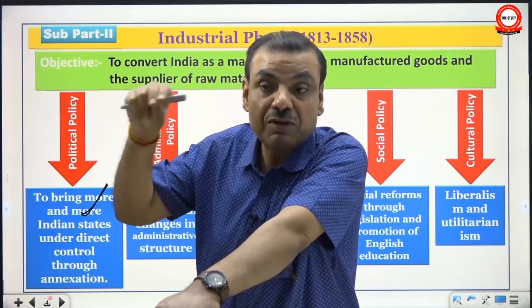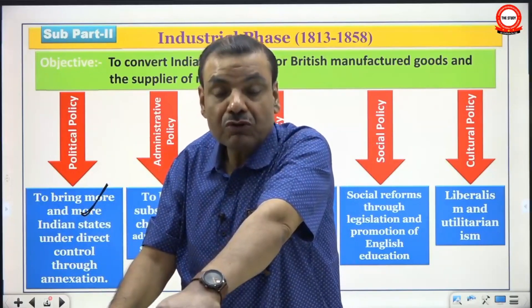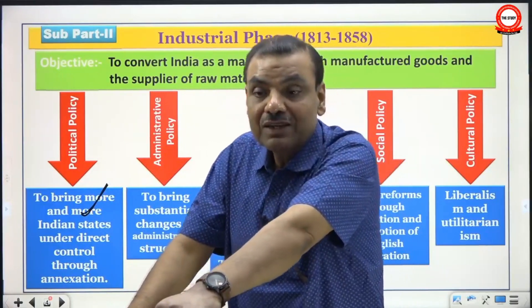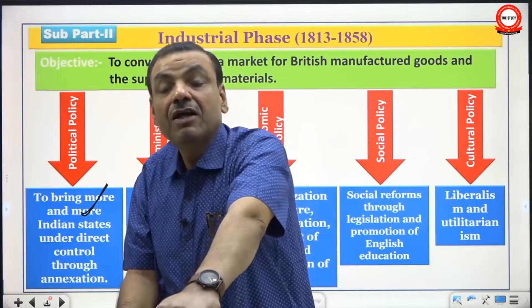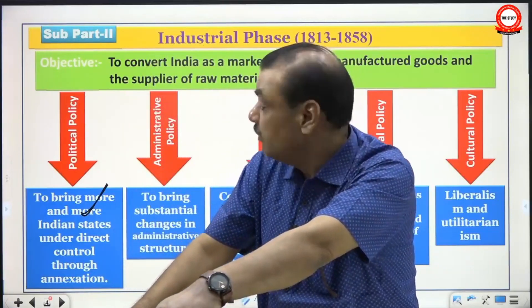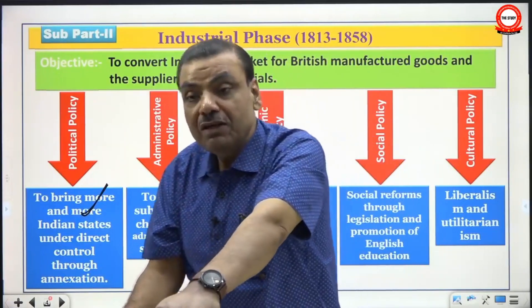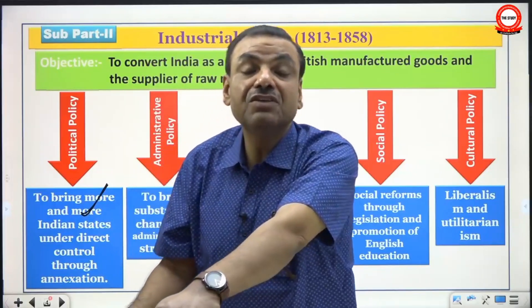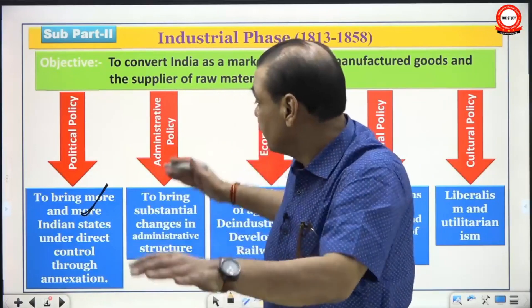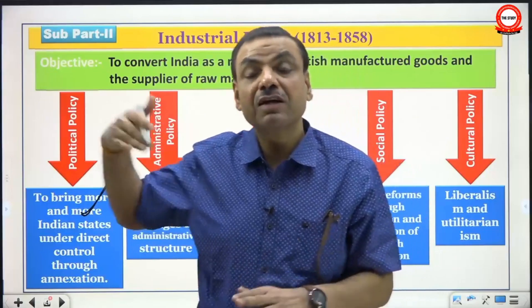Lenin made an addition of a specific phase of capitalism — the financial phase — as a further interpretation of Marxism according to the changing needs of the time. Following Lenin's method, Rajni Palme Dutt divided colonialism into three phases: mercantile, industrial, and financial. We are presently going across the industrial phase.